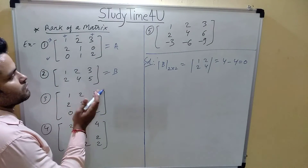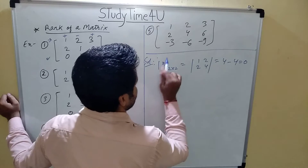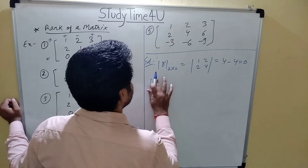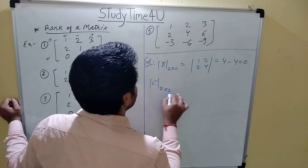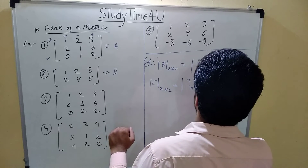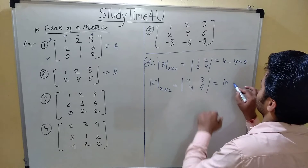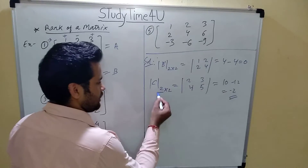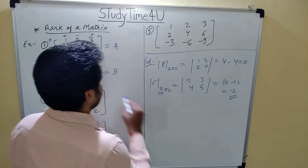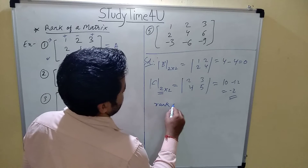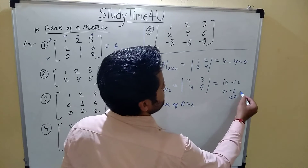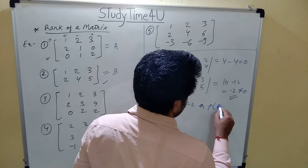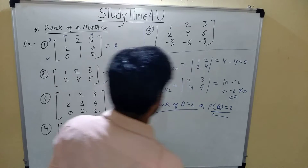We have to solve all the other 2×2 submatrices as well. Taking another 2×2 minor, call it C, formed by leaving the first column: entries 2, 4, 3, 5. So 2 times 5 = 10 and 4 times 3 = 12, giving minus 2. Since we are getting a value not equal to 0, the order of this determinant is the rank. Rank of B is 2.